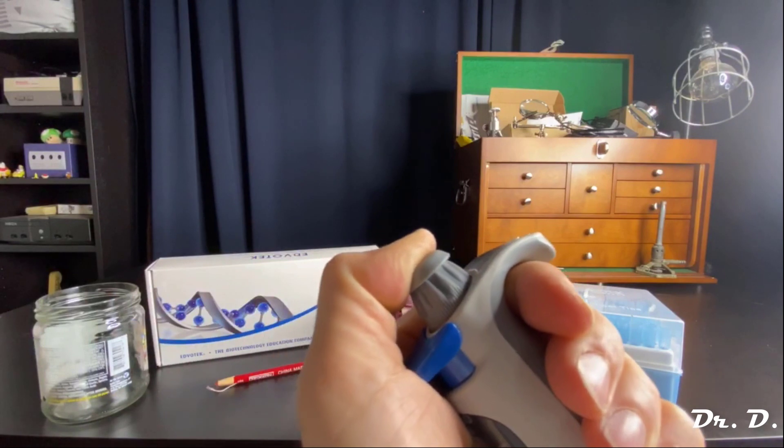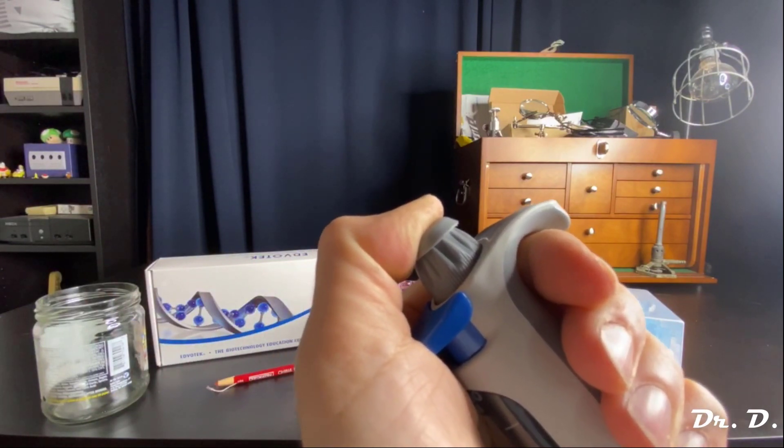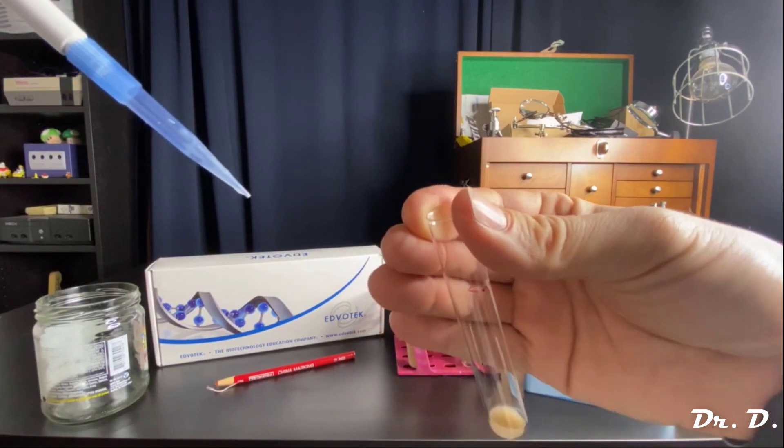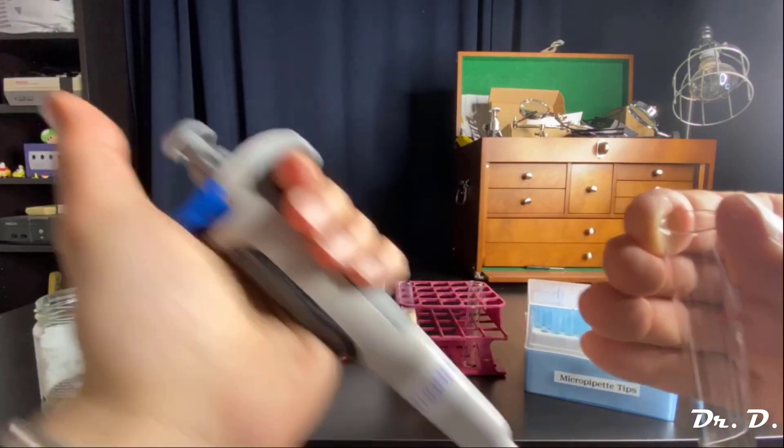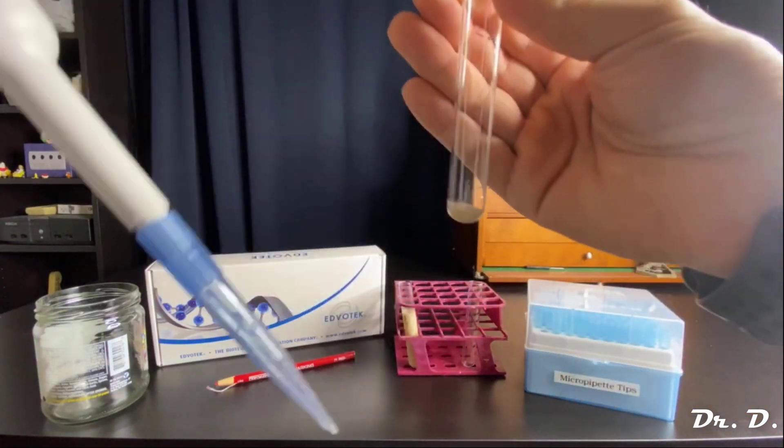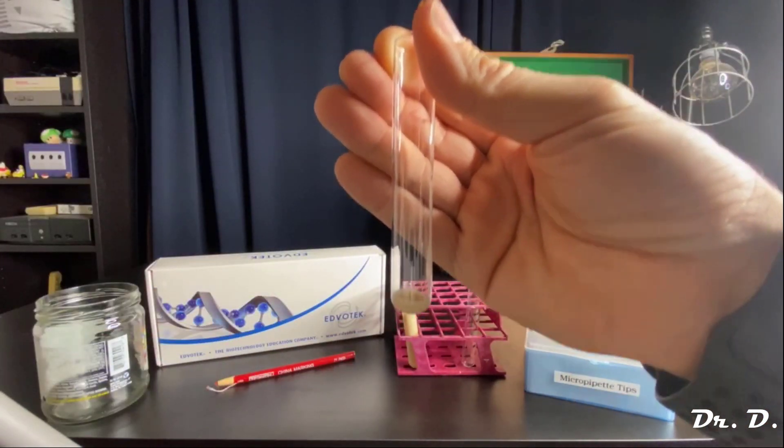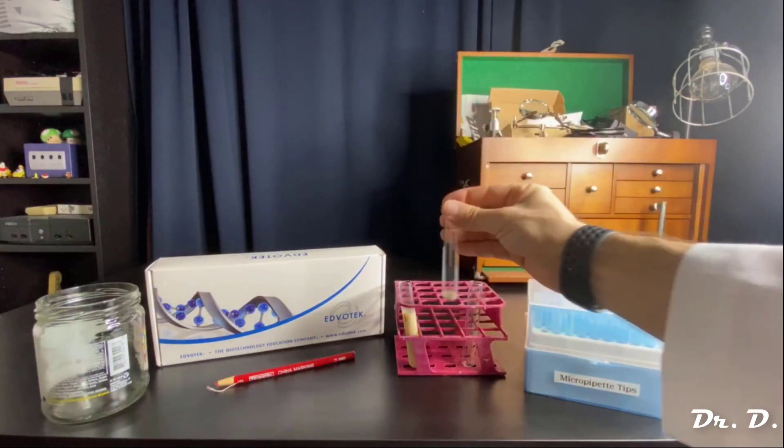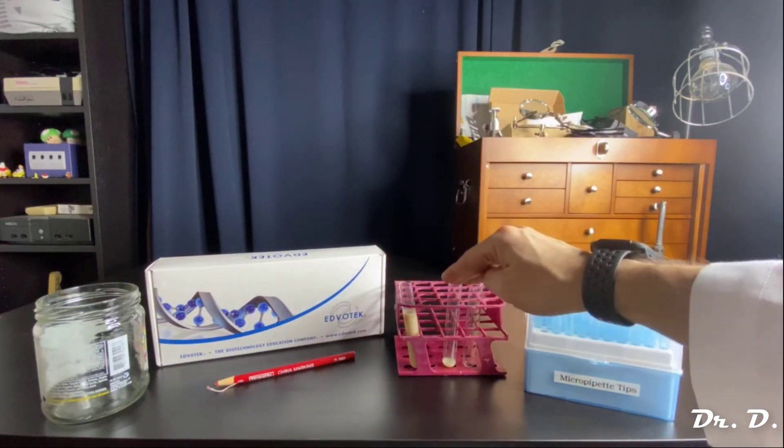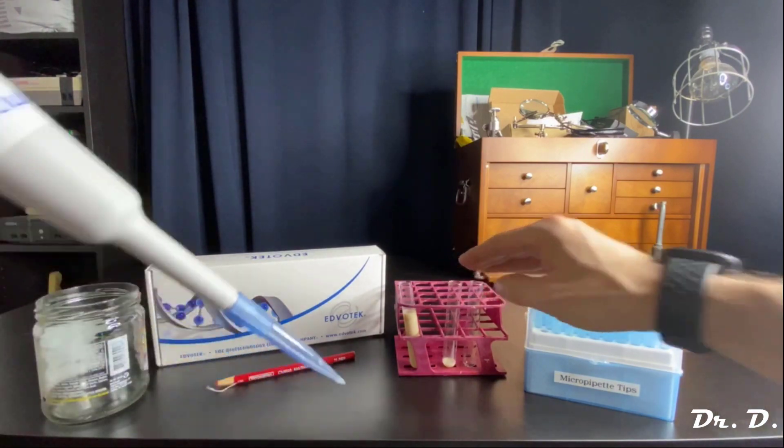And without letting go of my thumb, I remove the tip from the tube. Then I remove my thumb. And then there should be no solution left in my tip. And 500 microliters has been aliquoted into tube two. So there you go. I've aliquoted 500 microliters of solution from tube one to tube two.